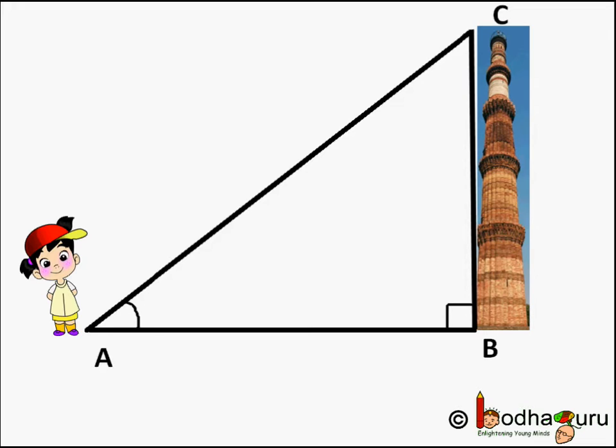Let us mark three points. A where Khushi is, B which is the base of the tower and C which is the tip of the tower.